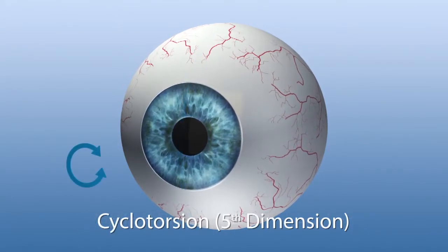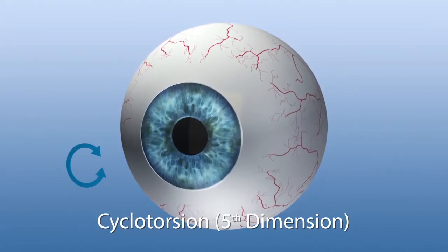The fifth dimension describes the eye's rotations around the visual axis, the cyclotorsion of the eye.